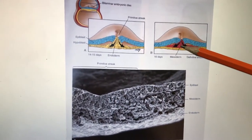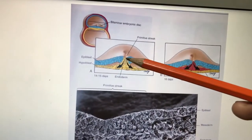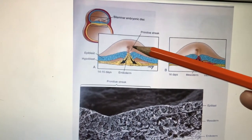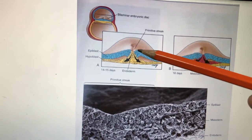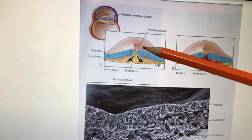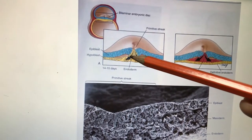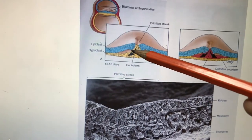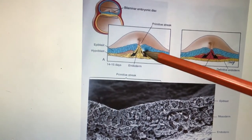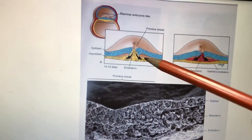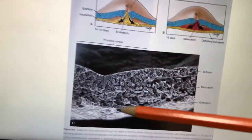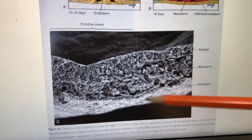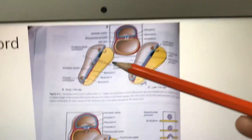When writing a short note about gastrulation, you must write: first, the primitive streak; second, the primitive node; third, the primitive pit. Through the primitive streak or groove the epiblast cells enter, displace the hypoblast, and form endoderm. Then they enter the middle and form mesoderm. The outer epiblastic layer transforms into ectoderm.